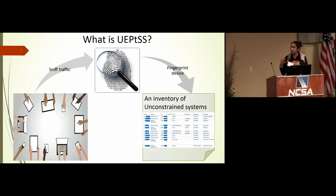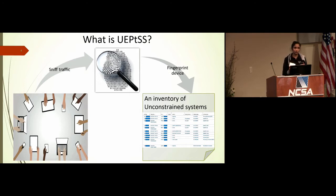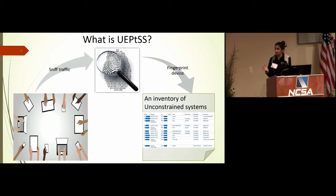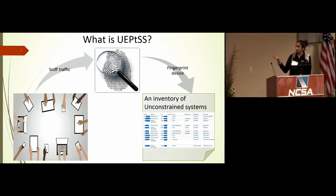Each student has multiple machines they bring and connect to the university network. We are building a system that can sniff and fingerprint traffic, then put all that information about each device into an inventory system. We have an inventory of servers we control, but not of unconstrained systems. The system especially works for environments with a BYOD policy — we sniff the traffic, fingerprint as much as we can, and put all the data into a systems inventory.